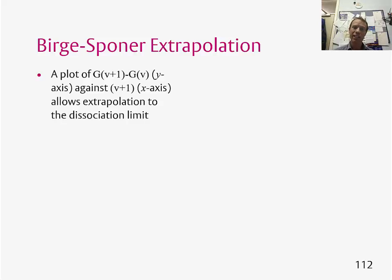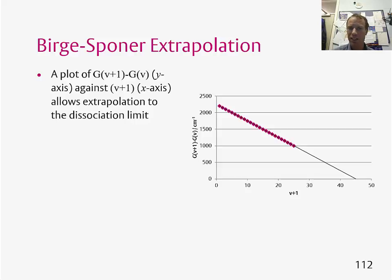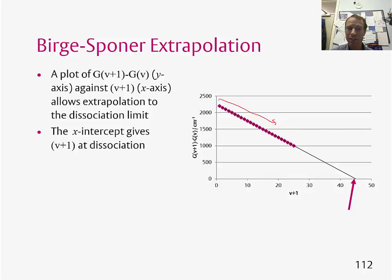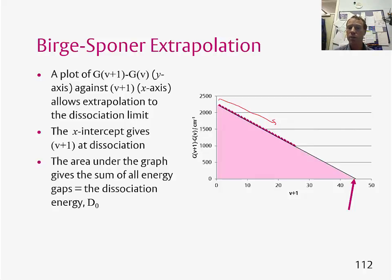We can plot this data. If you do a plot of the vibrational term for V+1 minus the vibrational term for V against V+1, you get a plot where each point represents the gap between two adjacent energy levels. You can see the gap gets smaller and smaller, and you can extrapolate to the intercept — this intercept effectively gives you the highest vibrational quantum number that exists for that molecule. Once you've done this extrapolation, you can calculate the area under this graph, and this gives you the dissociation energy of the molecule, D₀.